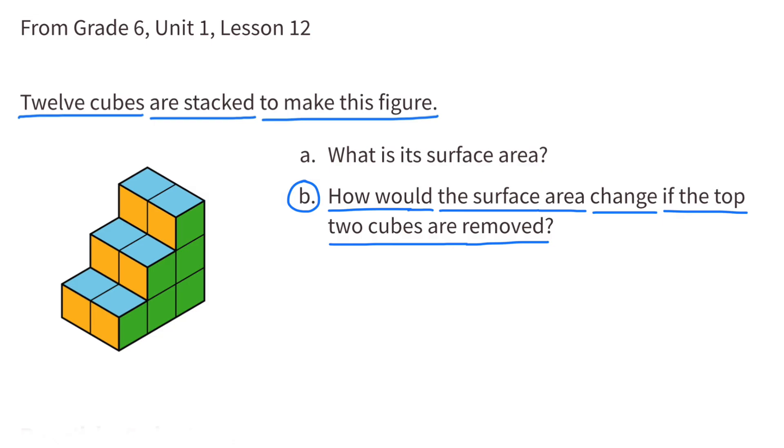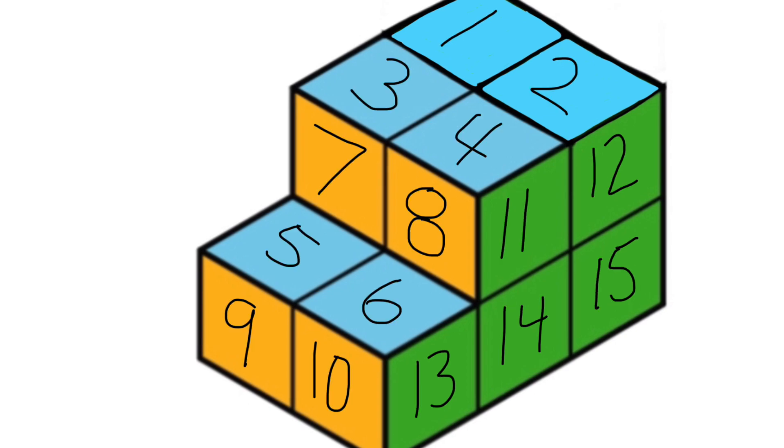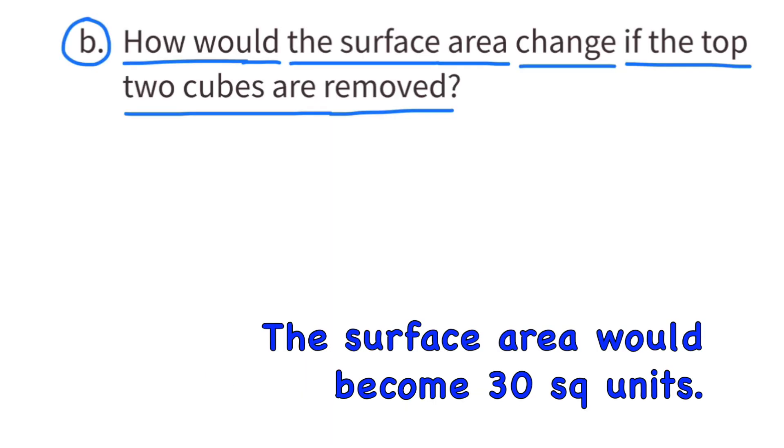Part B: How would the surface area change if the top 2 cubes are removed? Here's a look at the stack after removing the top 2 cubes. From this angle, we can see the top, the front, and the right side. And as you can see, I've counted 15 square units that we can see. But what we can't see is the bottom, the back, and the left side, and those would also total 15. So adding them all up, we would have a total of 30. So after removing the top 2 cubes, the surface area would be reduced to 30 square units.